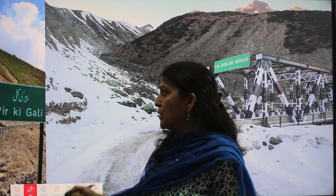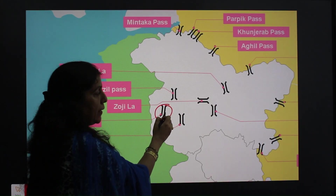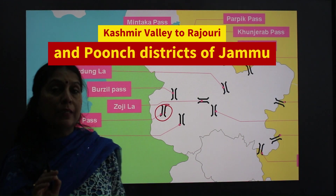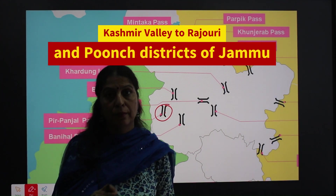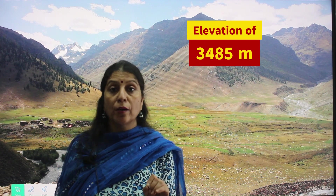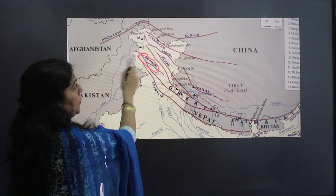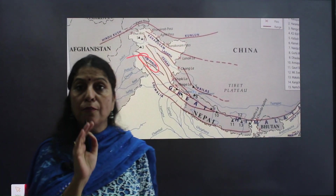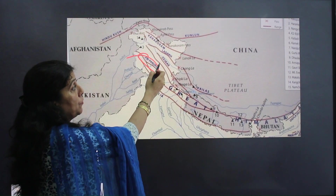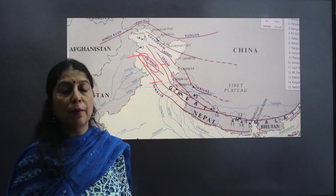The next pass is Peer-Panjal pass, which is also known as Peer-Ki Gali. Peer-Panjal pass connects the Rajouri and Poonch district of Jammu with Kashmir. It is located at an elevation of 3485 meters above sea level. Peer-Panjal pass is located in the Pir-Panjal ranges, which is a part of the Lesser Himalayas. The Lesser Himalayas lies between the Greater Himalayas and the Shivalik Hills.